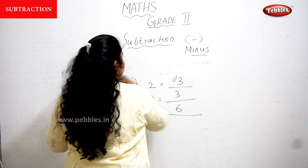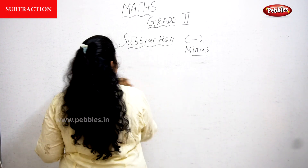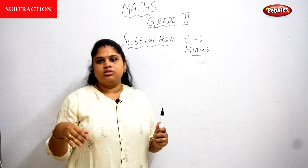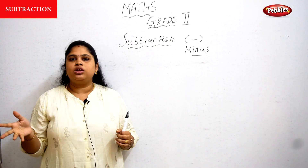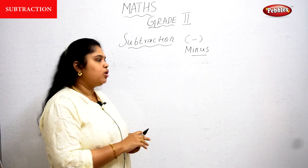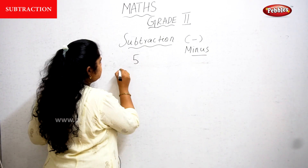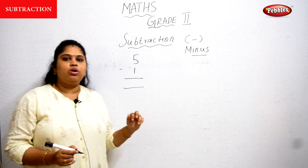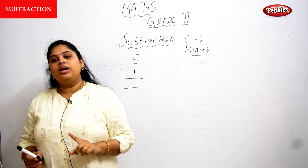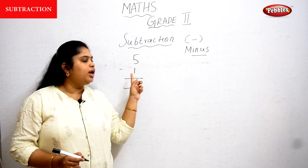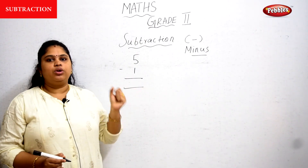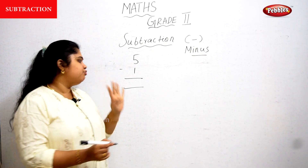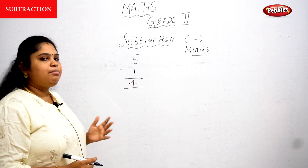This is how we perform subtraction using backward counting. As in addition, in subtraction we also see both horizontal and vertical subtraction. For example: 5 minus 1. From 5 to 1 in backward counting: 4, 3, 2, 1. How many fingers? Four fingers. So the answer is 4.